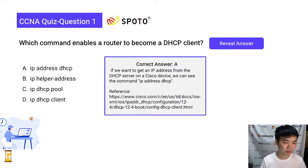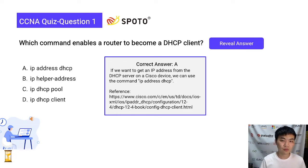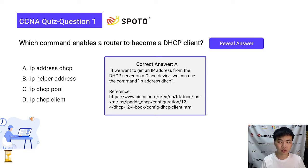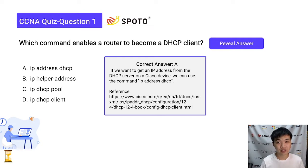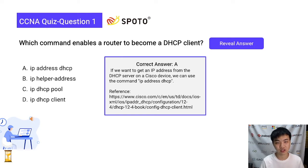The correct answer is A. We want to get an IP address from the DHCP server on the device. The command 'IP address DHCP' is used to obtain an IP address from a DHCP server. Option B, IP helper address, and option D, IP DHCP client, are not the correct commands to enable a router to become a DHCP client.